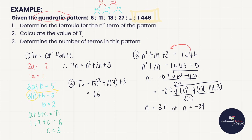Calculating gives two answers: n = 37 or n = −39. Since term numbers must be natural numbers, we reject the negative answer. Therefore, there are 37 terms in this number pattern, and term 37 equals 1,446.